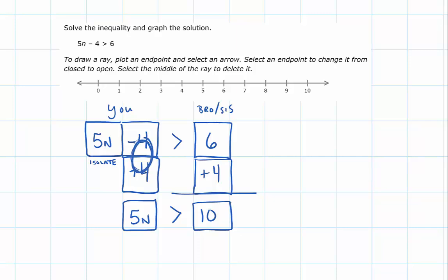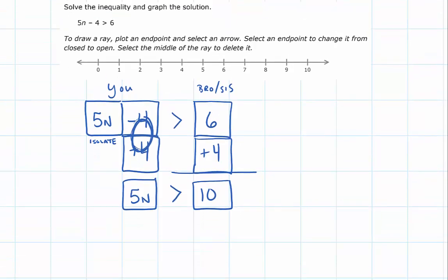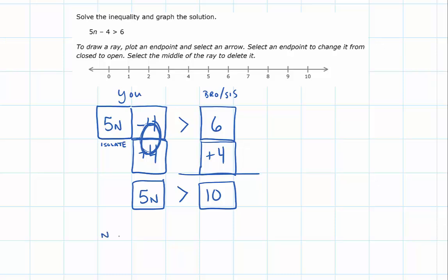And now it just comes down to understanding that we have to break our n's apart. I have five of them. And those five n's are still going to be greater than my 10, which I'm going to break my 10 into five equal sections as well. And that would give me the number 2 for each. So we realize right now that n is going to be greater than 2.